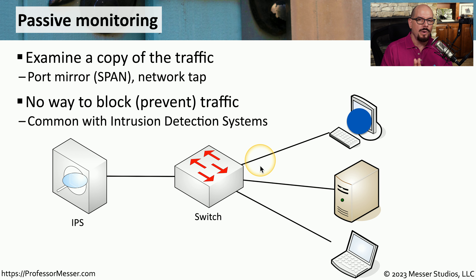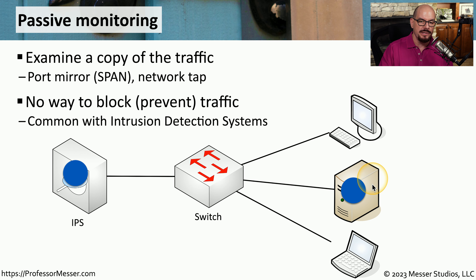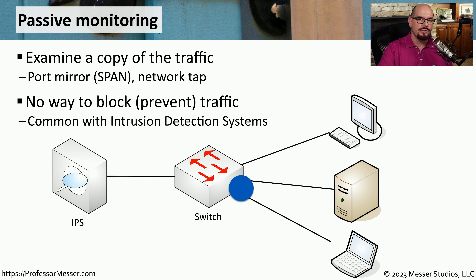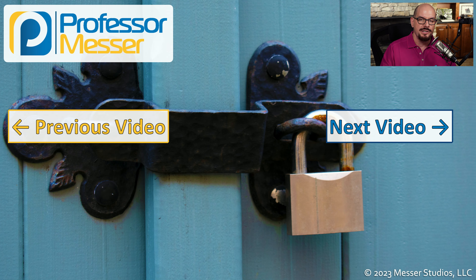A passive monitor requires that you have some type of method for receiving a copy of the traffic. This might be built into the switch and called a port mirror or a SPAN, which refers to a switch port analyzer, or you might use a physical network tap to break into a physical connection. With passive monitoring, any traffic sent into the switch will be duplicated. One copy will be sent on its way to the destination, and another copy will be sent to the IPS for evaluation. This happens with all traffic traversing the switch. The destination receives a copy of that traffic, and the IPS also receives a copy. This is a great way to identify and alert on malicious traffic, but it obviously isn't stopping the traffic from getting to the destination device.